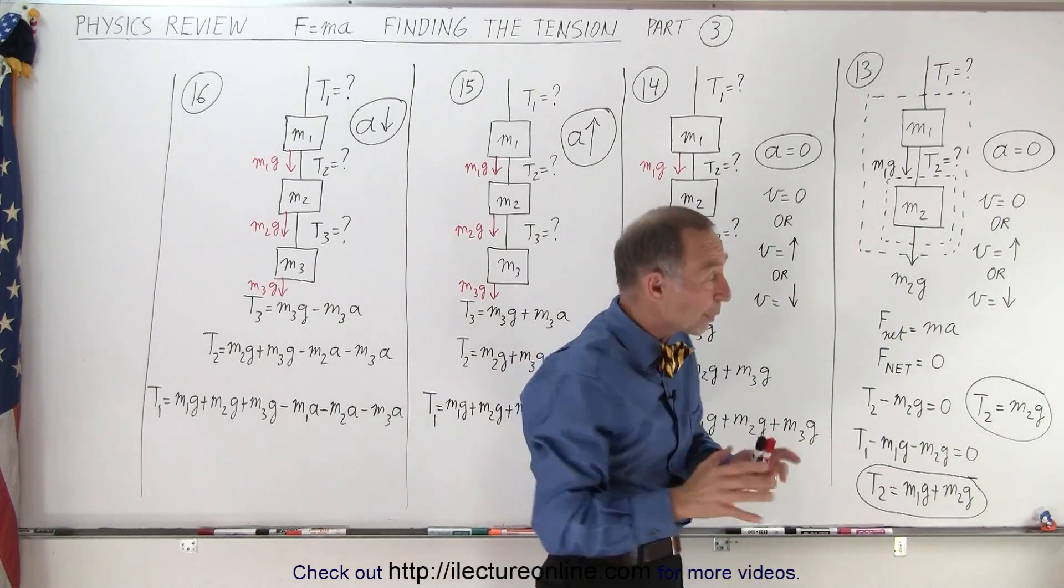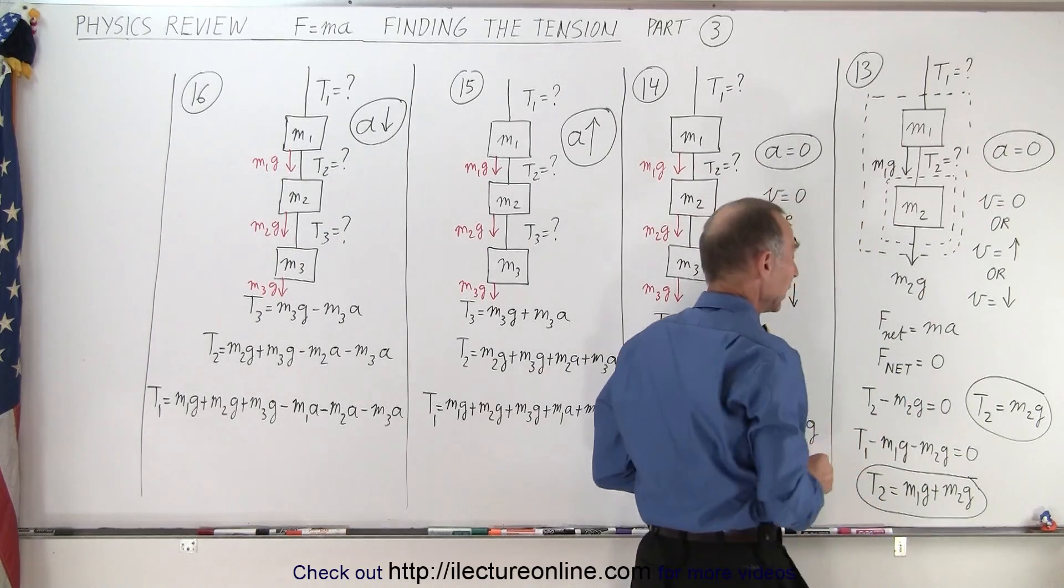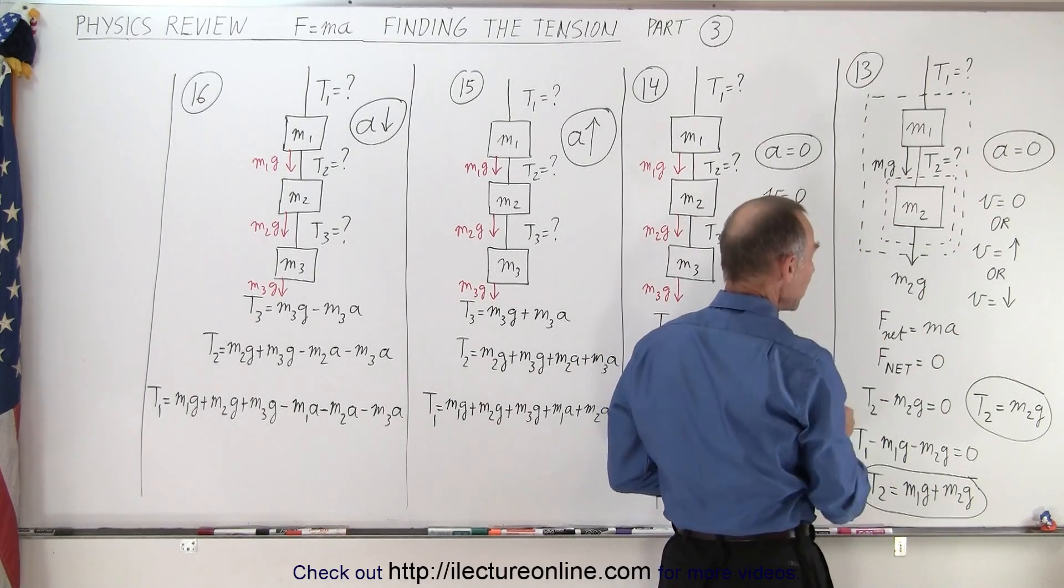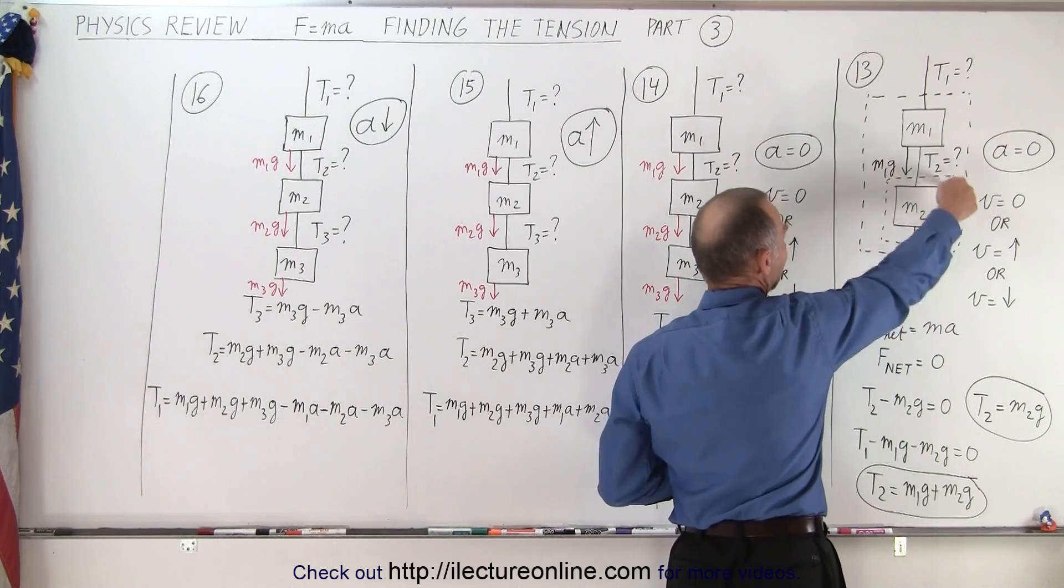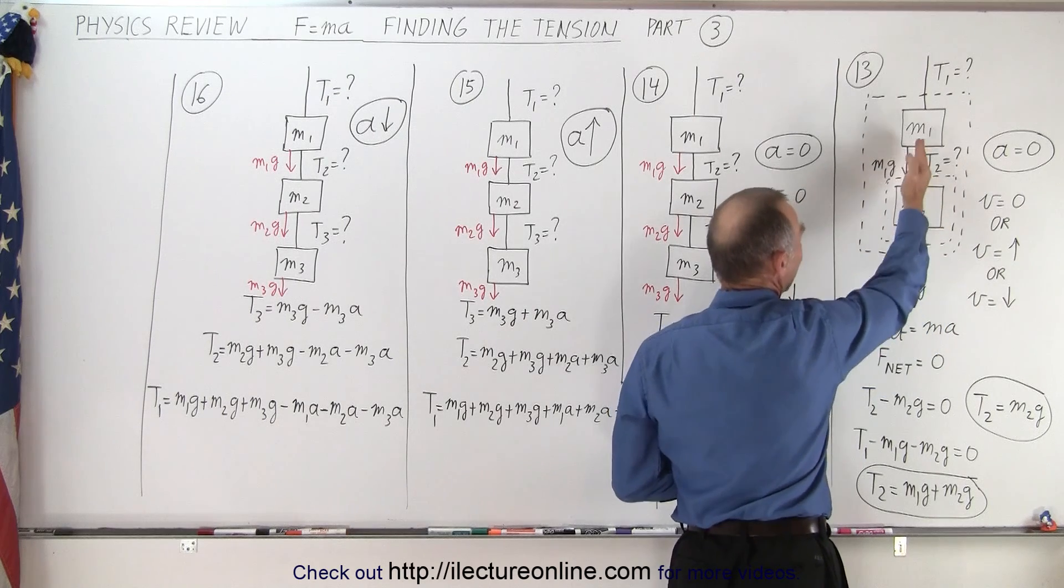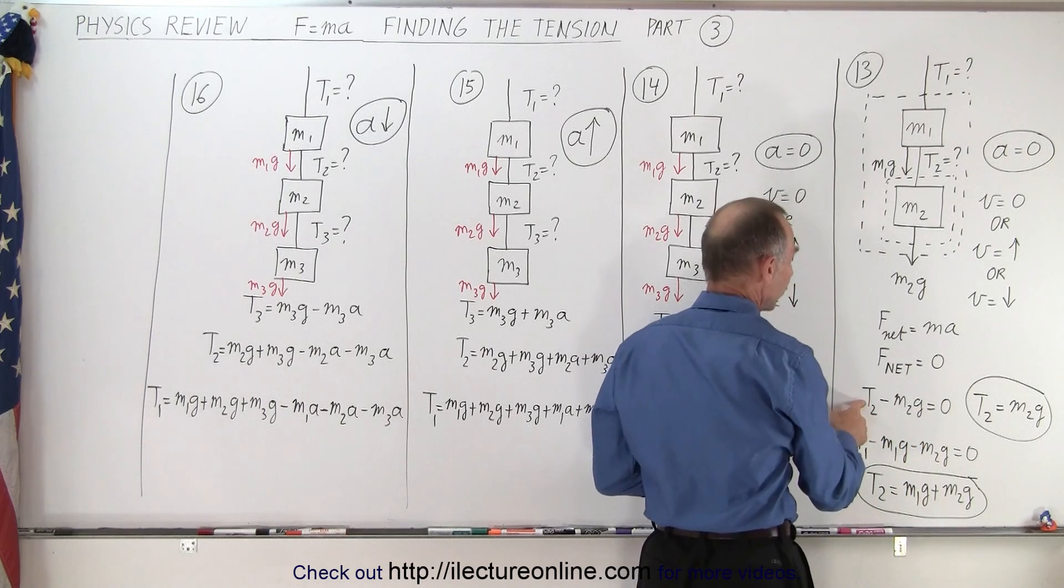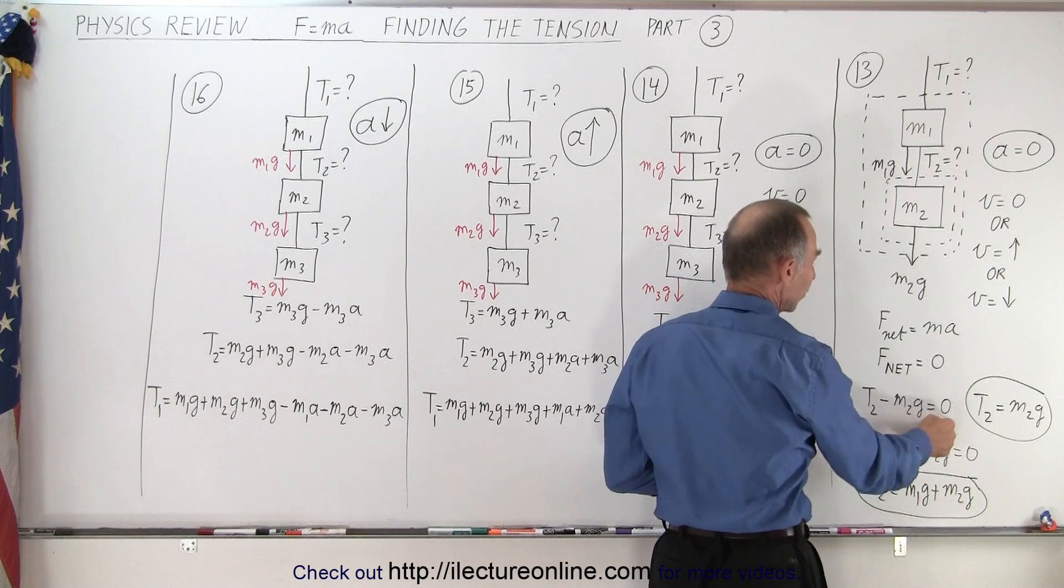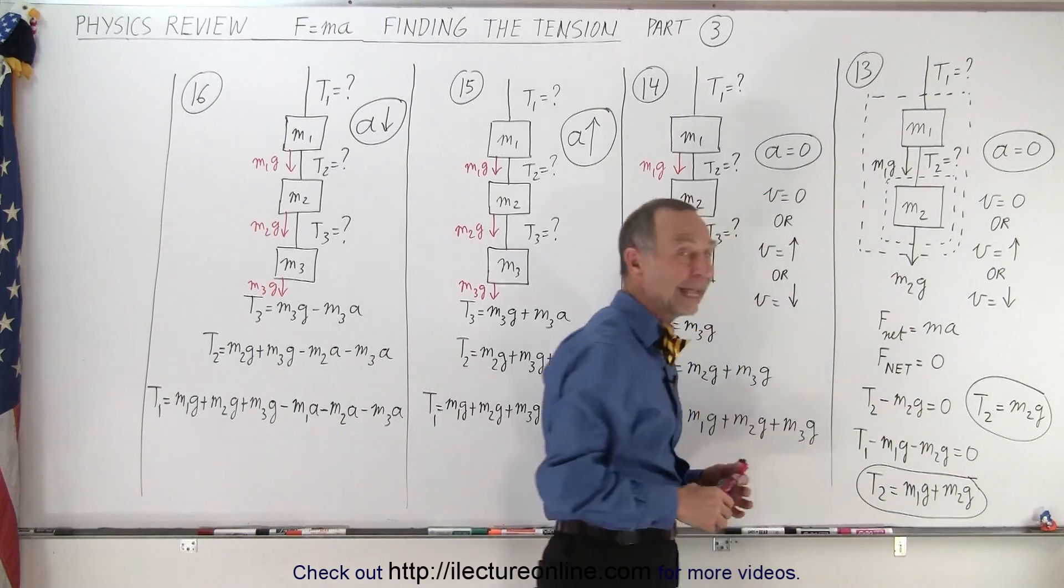It doesn't matter, all three will give you the same result, because in all three cases the acceleration is equal to zero. Since F net equals MA, the net force therefore equals zero. If we isolate just this object right here, we can see that we have tension two acting upward and M2G acting downward, so the upward force minus the downward force equals zero. Therefore, T2 equals the weight of M2.